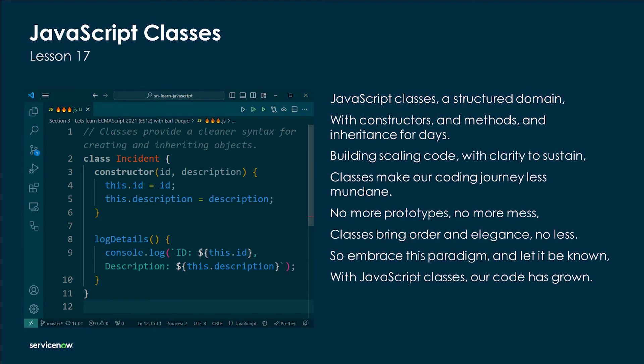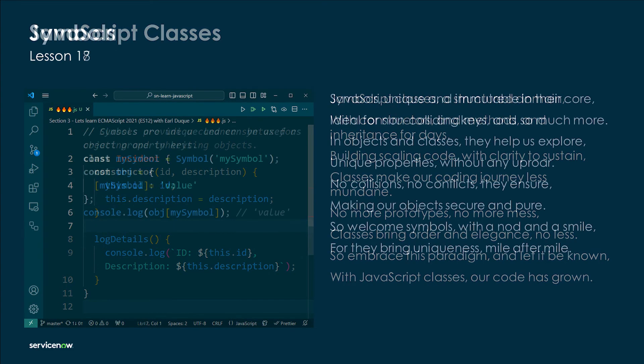JavaScript classes — a structured domain, with constructors, methods, and inheritance for days. Building scalable code with clarity to sustain, classes make our code journey less mundane. No more prototypes, no more mess — classes bring order and elegance no less. So embrace this paradigm and let it be known: with JavaScript classes our code has grown.